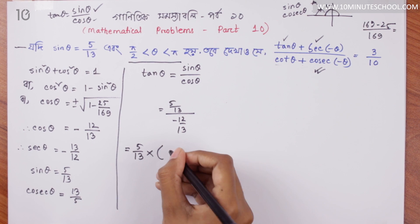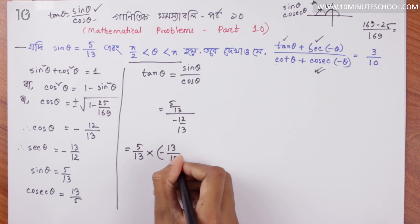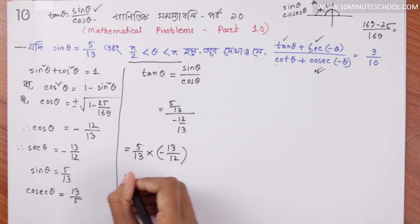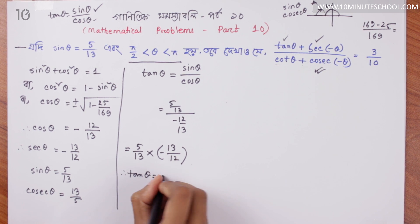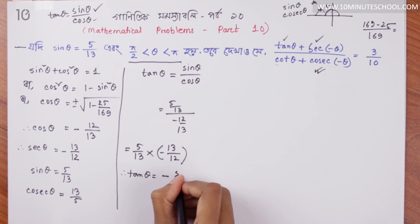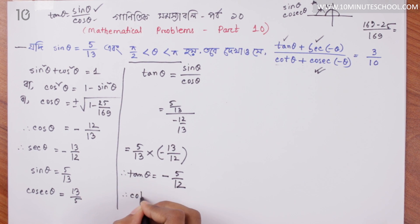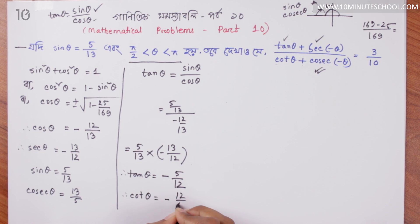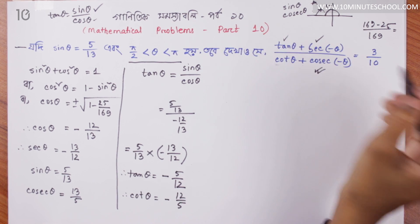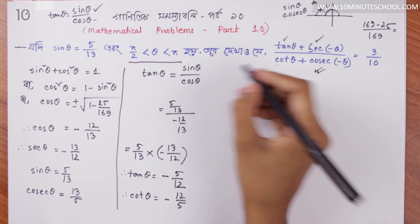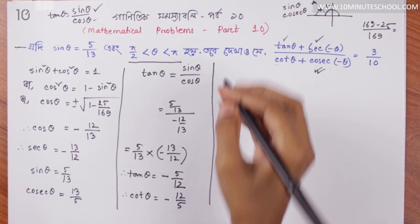There is one minus. The 13s cancel, leaving 5 on top and 12 on the bottom. So tan θ = −5/12. And cot θ = −12/5. We have now obtained all the sign values.